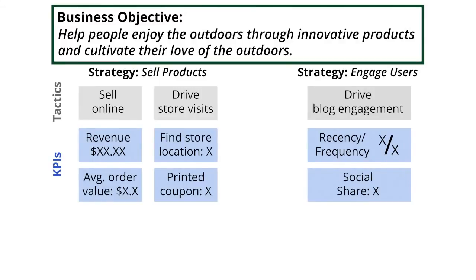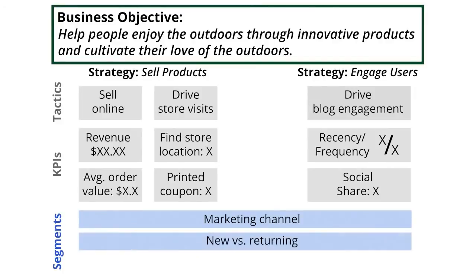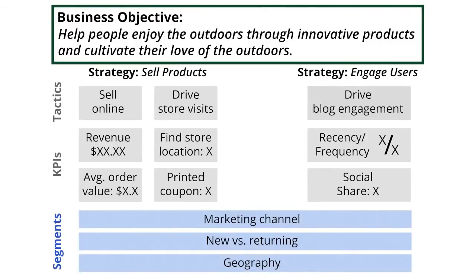Once you have defined the KPIs you want to measure, you need to document which segments of data are important to measure. For example, when thinking about our fictional store, we might want to see our KPIs segmented by marketing channel. As a business, we're likely investing in different marketing channels such as search, display, email, and social, and we want to know how much value we're ultimately getting from those investments. We might also look at customer type — new customers versus repeat customers — to see how much of our business is being driven by each segment and whether there are opportunities for driving more customer loyalty. Since we have physical stores, we might also be interested in the geography of our site visitors, to see if certain geographies near stores are performing better than other locations.